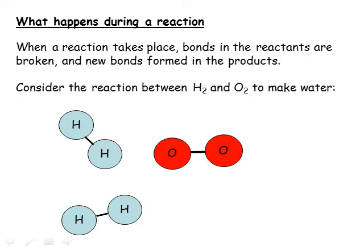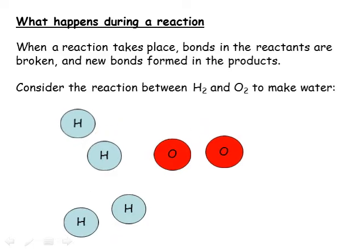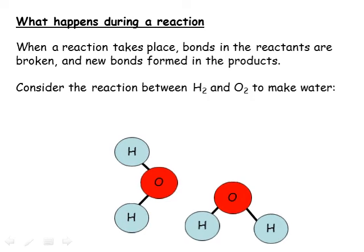If we want to understand what makes a reaction exothermic or endothermic, we need to think about the reaction in terms of bonds breaking and bonds being made. During any reaction, bonds in the reactants have to be broken, and this requires energy to be supplied. The atoms are then able to form new bonds to create the products, and bond making releases energy.